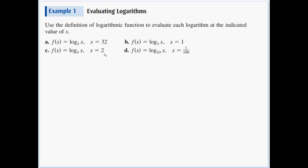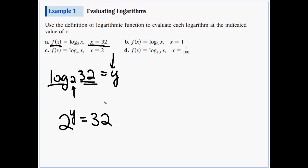In example one, we're going to use that definition to rewrite these logs as exponentials and solve for the indicated value of x. For the first one, we have y equals log base 2 of 32. I'm going to write this full one out: log base 2 of 32 is equal to y. Logs are equal to exponents, so 2 to the y equals 32. I can write that as 2 to the fifth power, and now we can set the exponent y equal to 5.